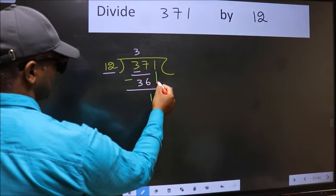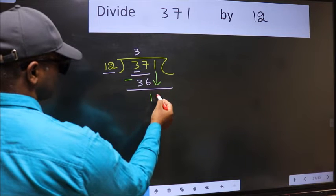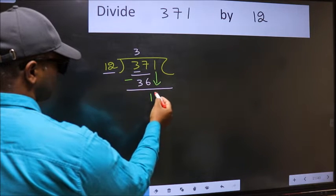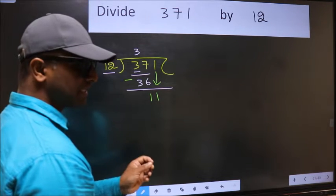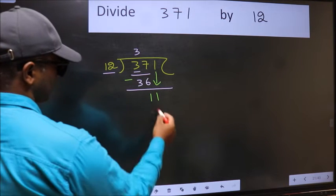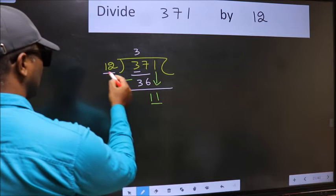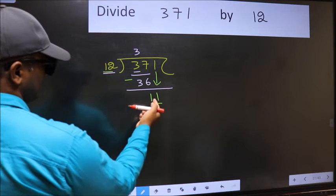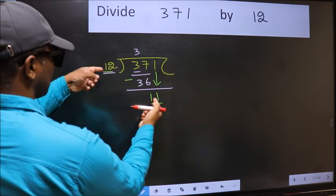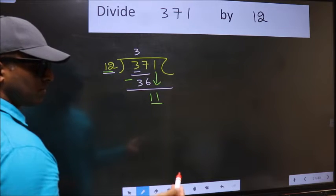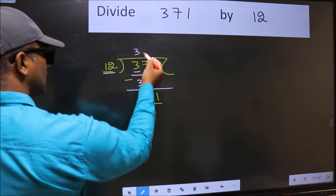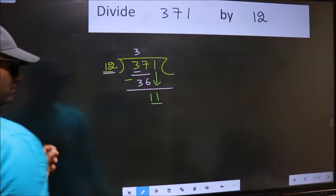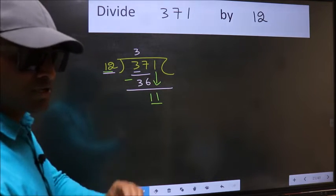After this, bring down the beside number, so 1 down. After this step, the mistake happens. Here we have 11 and here 12. 11 is smaller than 12. So what many do is they directly put a dot and take 0, which is wrong. Why is it wrong?